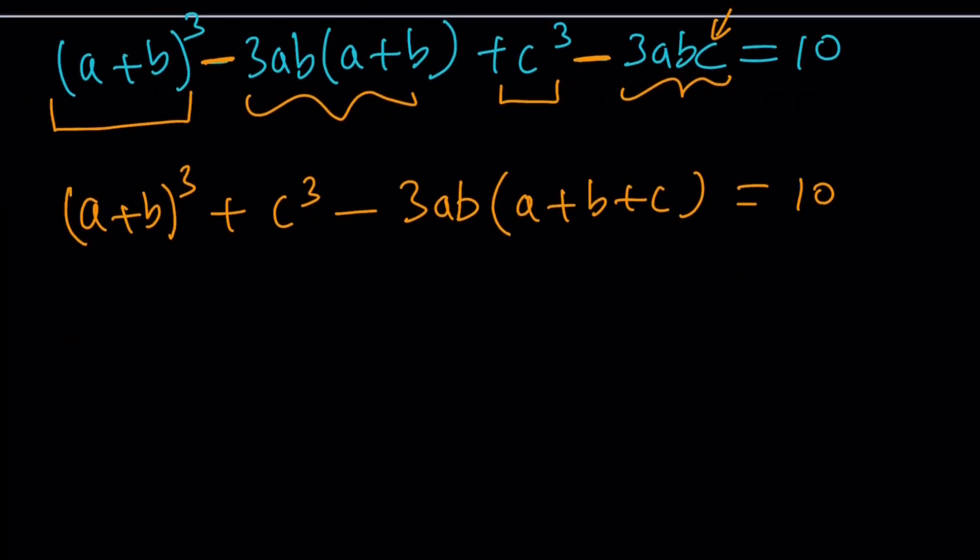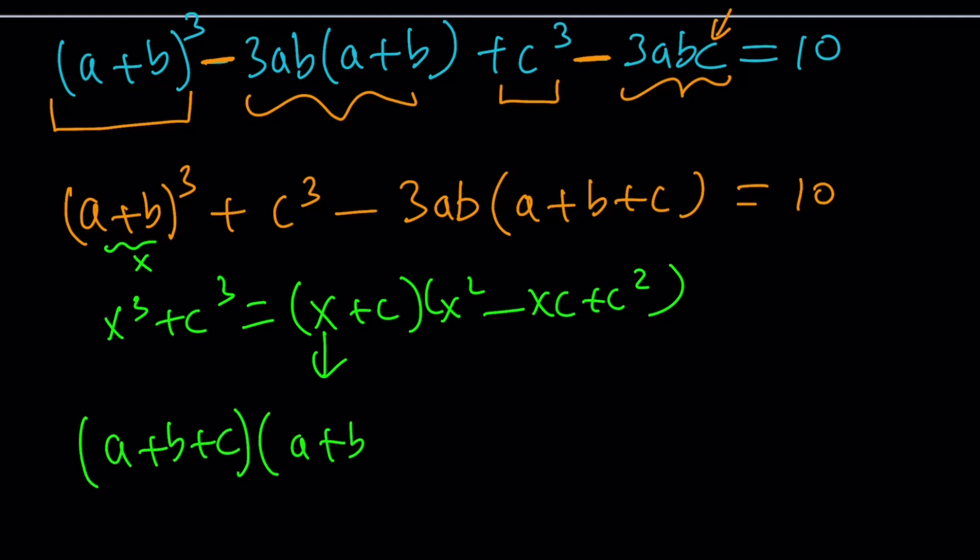Now, I told you this is factorable because (a + b)³ + c³ is divisible by a + b + c. Why? Because of sum of 2 cubes. Remember the formula? Call this x if you want, like I said. And you're going to get x³ + c³, which is equal to (x + c)(x² - xc + c²). That's the sum of 2 cubes. Now, replace x with a + b and you're going to get the following. (a + b + c) multiplied by (a + b)² - c(a + b) + c² from here. So, this is what it is.